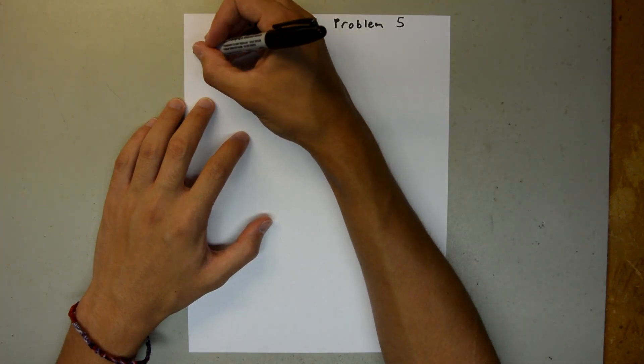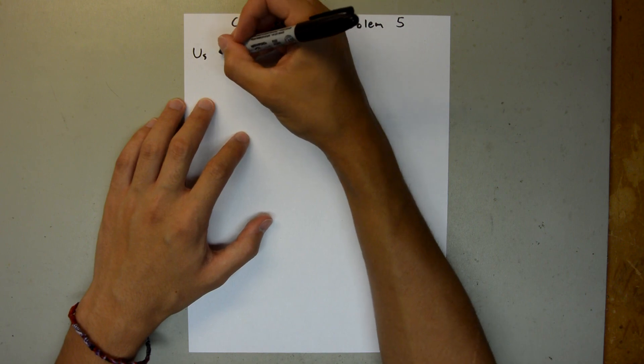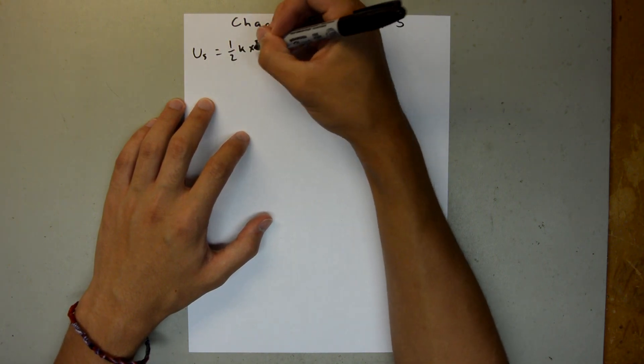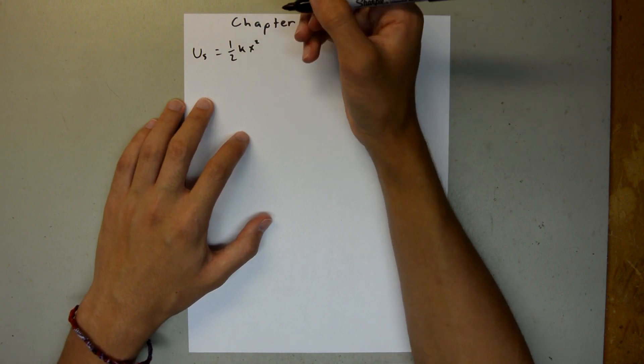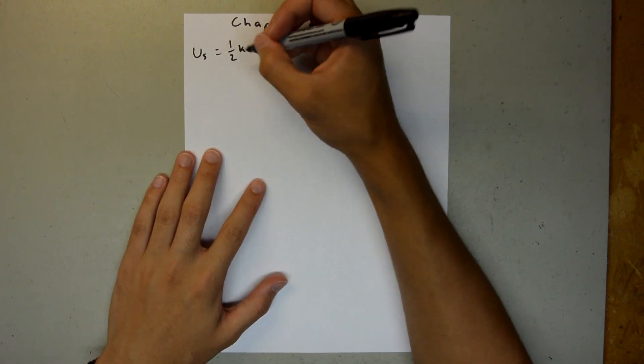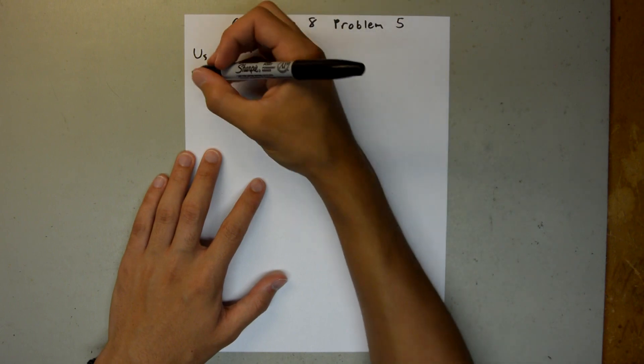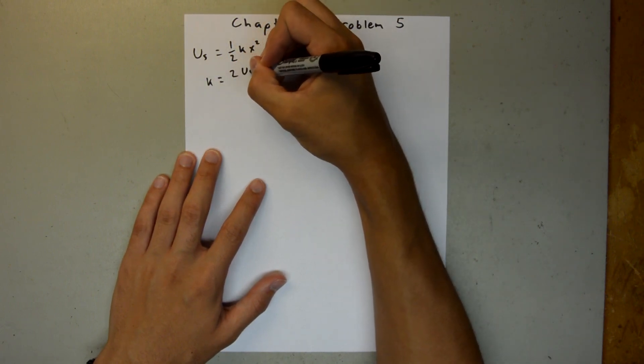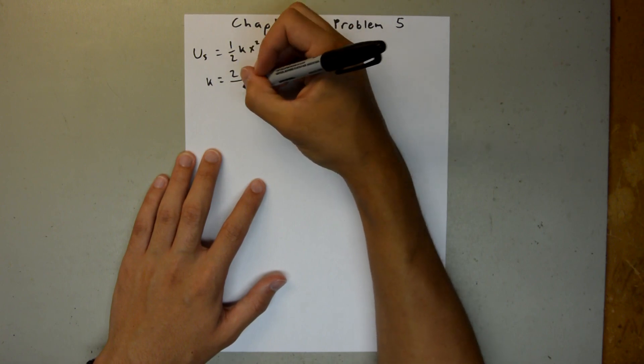So we know that the potential energy of a spring is equal to 1/2 kx², where x is the displacement of the spring and k is the spring constant. We can rearrange this for the spring constant and say k is equal to 2 times the potential energy of the spring over x².